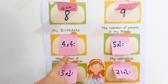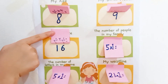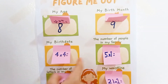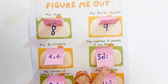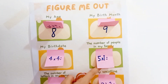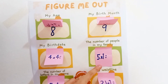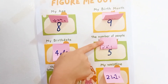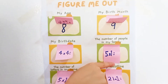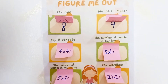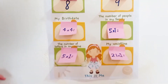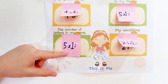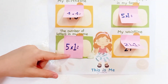Next, my birth date: four times four equals — let's open it — sixteen! Then, the number of people in my family: five times one equals five, and we are all five members.